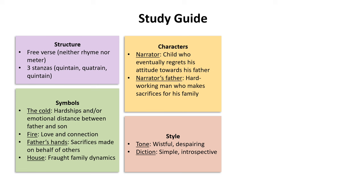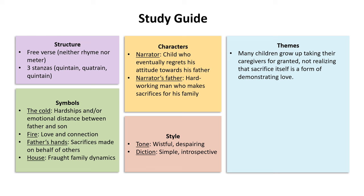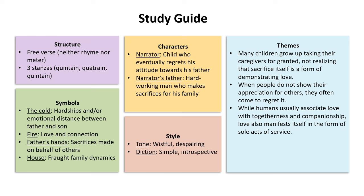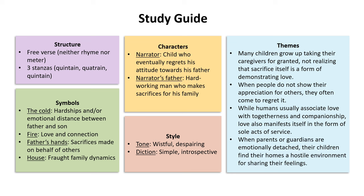Taking all of these elements into consideration, we can write theme statements to explain the universal ideas about human nature that this poem conveys. First, many children grow up taking their caregivers for granted, not realizing that sacrifice itself is a form of demonstrating love. Additionally, when people do not show appreciation for others, they often come to regret it. Another theme is that while humans usually associate love with togetherness, love also manifests in sole acts of service. Our last theme statement is: when parents or guardians are emotionally detached, their children find their homes a hostile environment for sharing feelings, as the narrator feels closed off from his family because his caregivers never encouraged him to express his emotions.